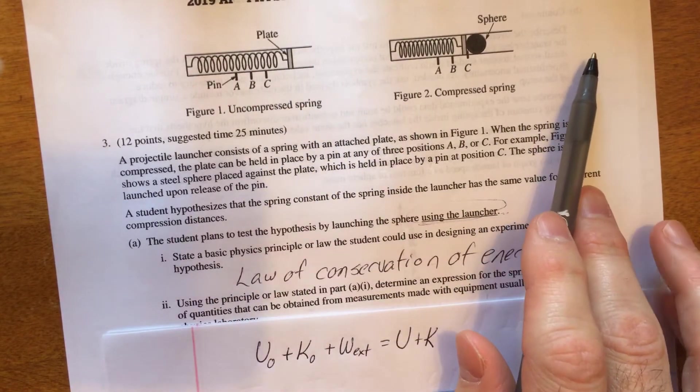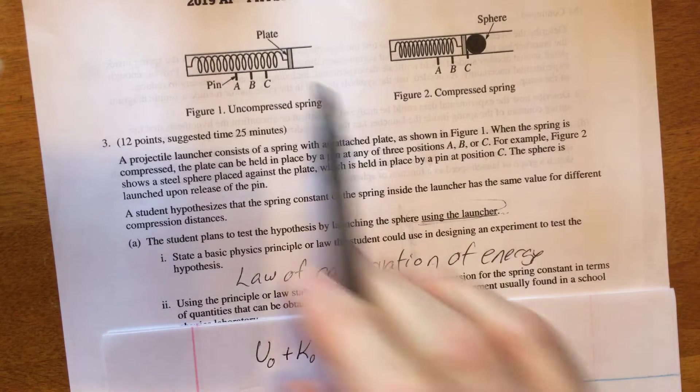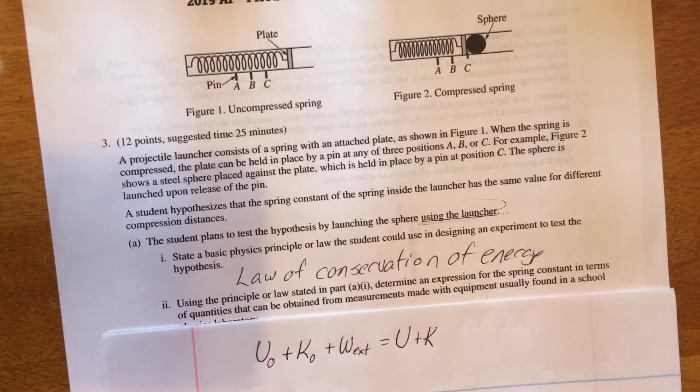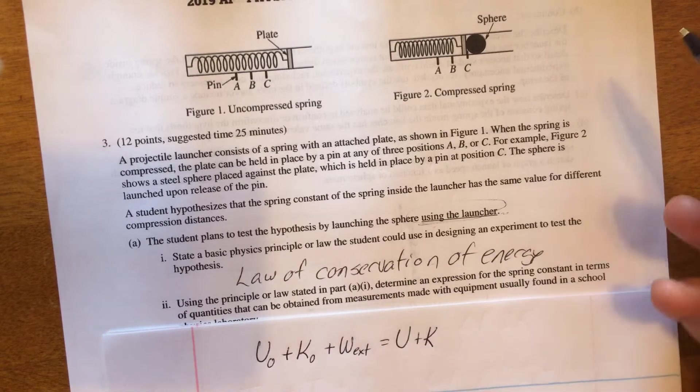Now what I think I'm going to choose to do, and there's a few ways to do this experiment. I think I'm going to launch this one horizontally. I think they may have had us thinking about that since that's how they drew it. You could also launch it vertically in an experiment and apply conservation of energy. But for my experiment, I'm going to talk about launching it horizontally.